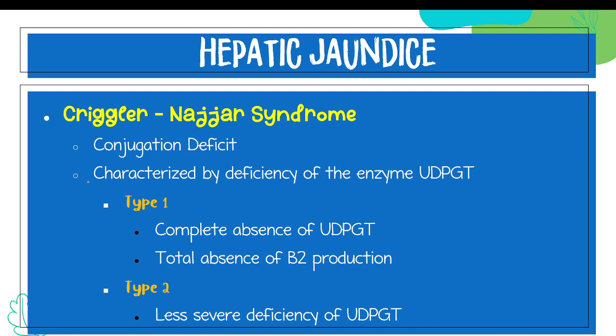Crigler-Najjar syndrome is the condition where there is truly a problem with the conjugation of bilirubin 1 to bilirubin 2, since it is characterized by a deficiency of the enzyme UDPGT. There are two types: Type 1 involves complete absence of the enzyme, resulting in a total absence and unmeasurable concentration of bilirubin 2. Type 2 is less severe, with a partial deficiency of UDPGT.